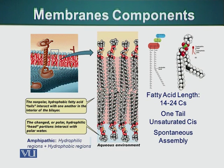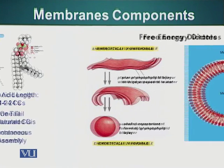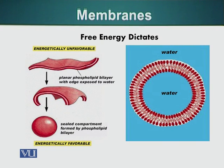Now let's look at how these membranes form. These membranes form different structures — basically a sphere. It is energetically favorable for these membranes to fold and form spheres. The head regions, shown as red dots on the screen, are the polar groups of the membrane; they remain in contact with the aqueous environment, whether outside or inside the cell.